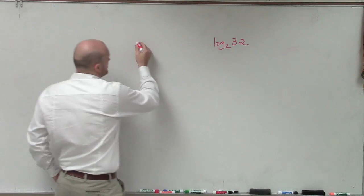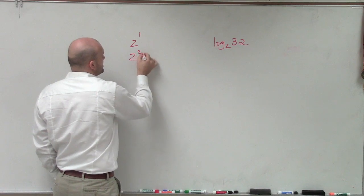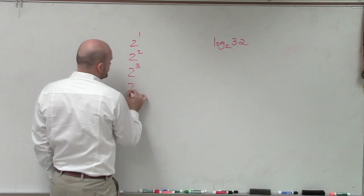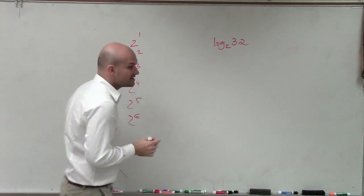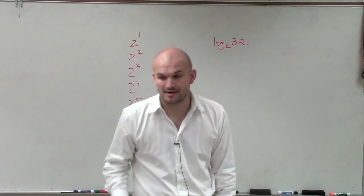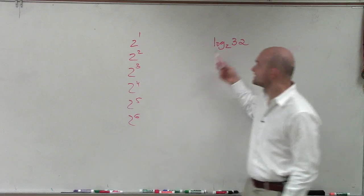So let's go through the powers on our base of 2. 2 to the first power, 2 squared, 2 cubed, 2 to the fourth, 2 to the fifth, and I'll go to 2 to the sixth. We'll see if we can find our solution before that. We're saying 2 raised to what power is going to equal 32?